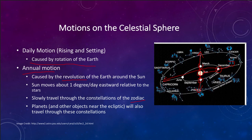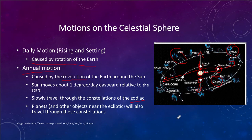The zodiac constellations are not necessarily the most prominent ones. Many of them — like Libra, Cancer, and Aries — do not have really bright stars at all. But they are prominent still because they are among those 12 constellations the sun will pass through over the course of a year.